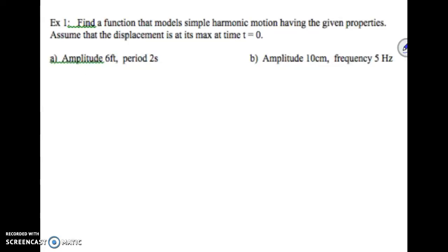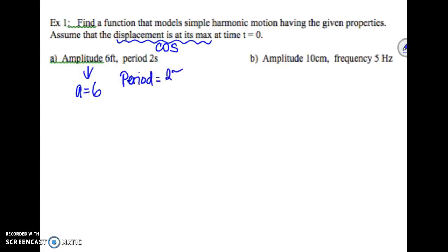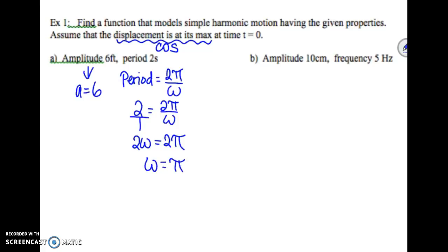Example one: find a function that models simple harmonic motion having the given properties. Assume that the displacement is at its max at time t equals zero. The words 'displacement is at its max' tell us we're going to write the equation in terms of cosine. Our amplitude is 6 feet, so a equals 6. The period is 2 seconds. Remember period equals 2 pi divided by omega, so 2 equals 2 pi over omega. Cross-multiplying gives us 2 omega equals 2 pi, so omega equals pi.